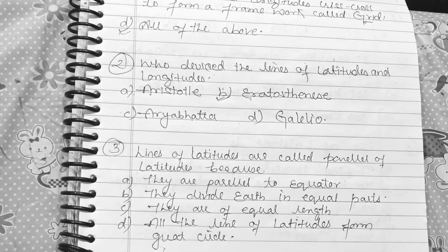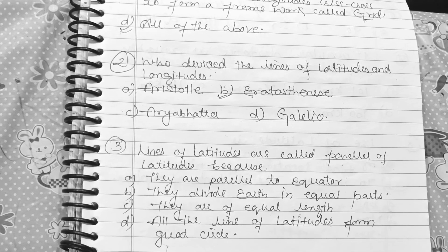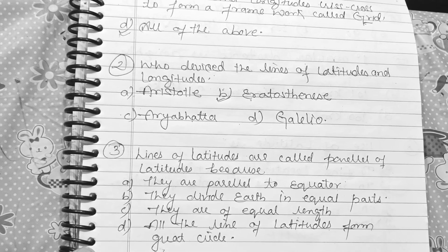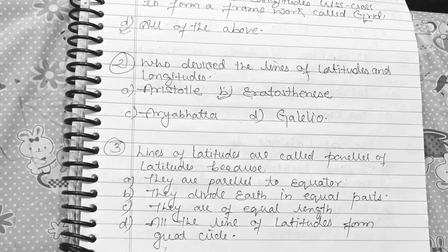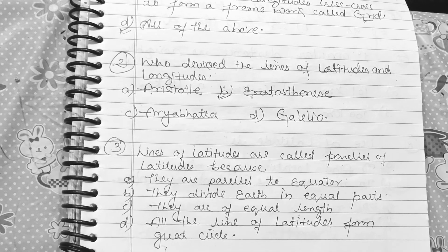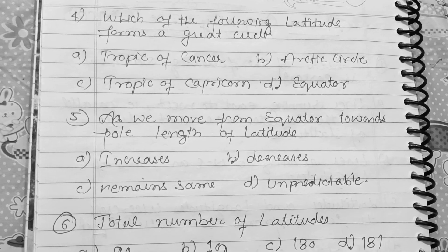Question 3: Lines of latitude are called parallels of latitude because — Option A: they are parallel to the equator. Option B: they divide the earth into equal parts. Option C: they are of equal length. Option D: all lines of latitude form great circles. The correct answer is option A — they are parallel to the equator.